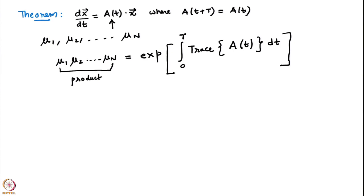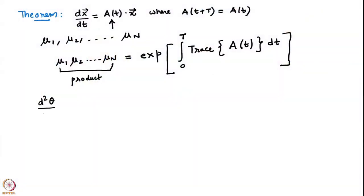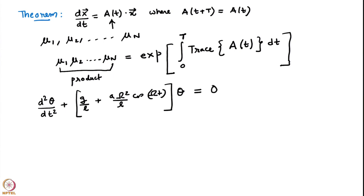We will need this theorem in addition to the Floquet theorem for analyzing the Mathieu equation. Recall that we are analyzing the motion around the lower fixed point for the Kapitza pendulum. Our equation was d²θ/dt² + (G/L + Aω²/L · cos(ωt)) · θ = 0. We retained the first term in the Taylor series approximation, and θ is already non-dimensional.